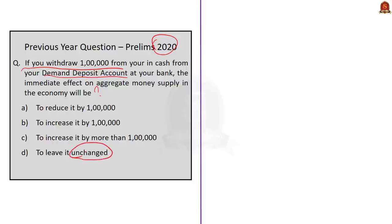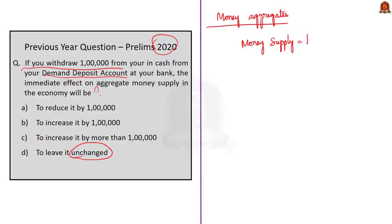Solving this question will be very easy if you understand the concept of money aggregates. Money supply is the total stock of money — the total amount of money in circulation among the public at a particular point of time. Every paisa in your pocket and my pocket is taken into account as money in circulation within an economy.